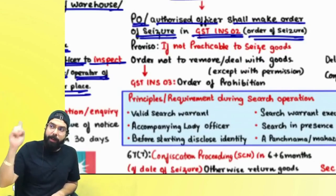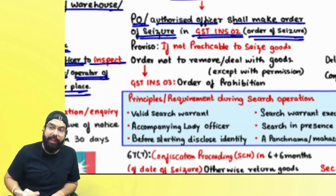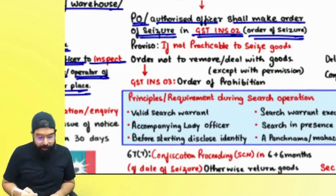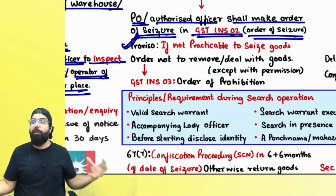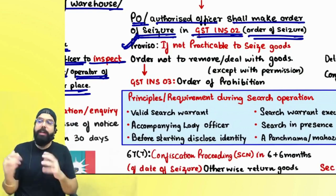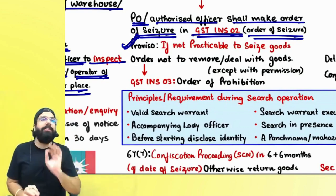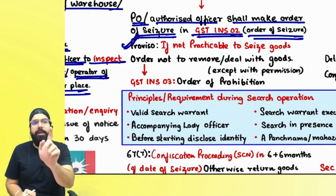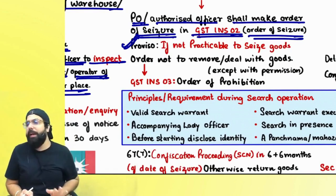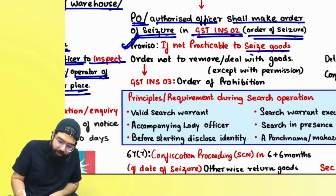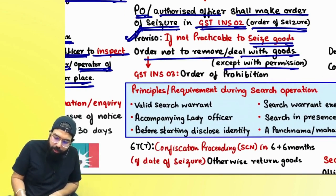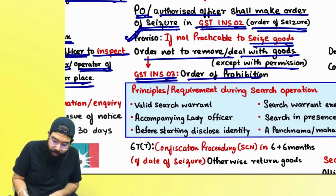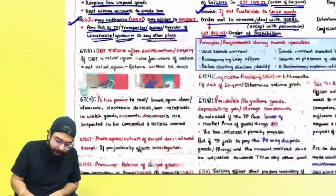They will use the seized items and pass a show cause notice against you and then a demand order. The proviso says, if it is not practicable to take all goods, they will put a seal and issue an order of prohibition — GST INS 01 — meaning you cannot deal with these goods without permission.